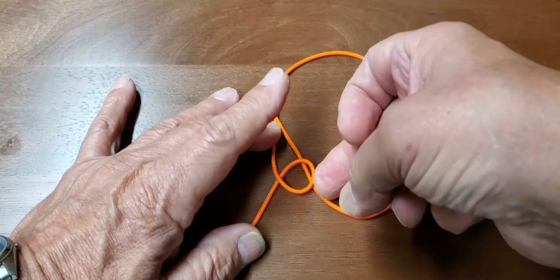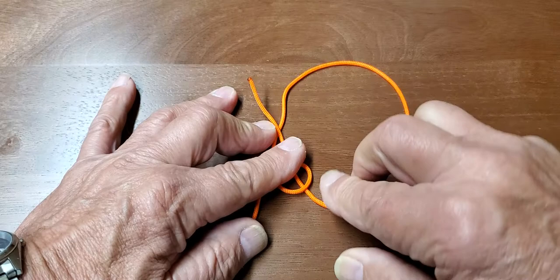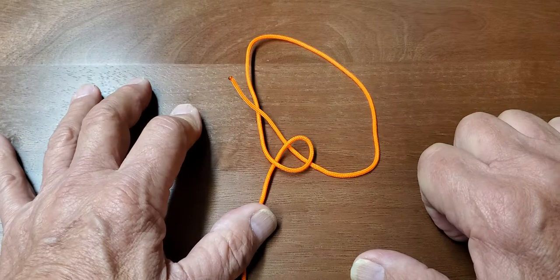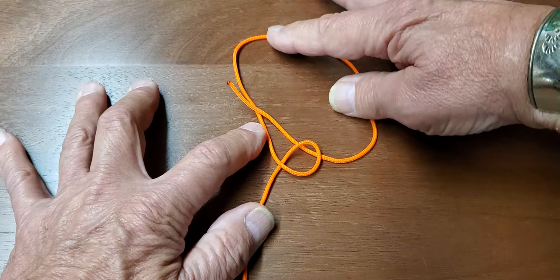Take the short end and bisect our loop. So that's what we have right now. We just bisected the loop, and we have a loop up here.